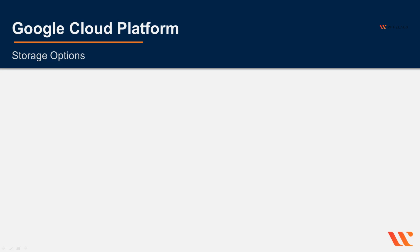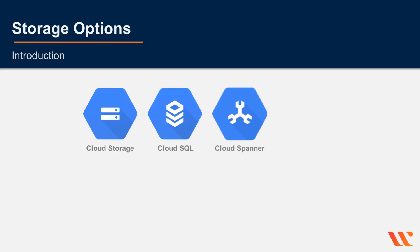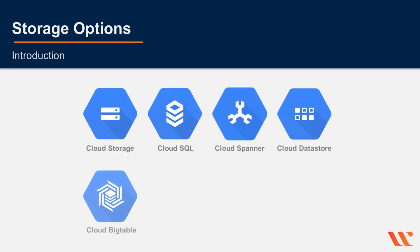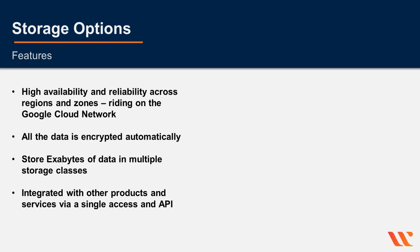The Google Cloud Platform provides a lot of options for storage. In this lecture we will explore some of these options. There are eight main storage options: Cloud Storage, Cloud SQL, Cloud Spanner, Cloud Datastore, Cloud Bigtable, Cloud BigQuery, Persistent Disk, and Firestore. These storage products are on the highly reliable and available Google network.